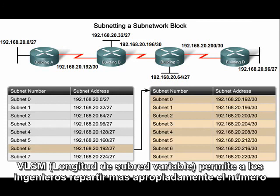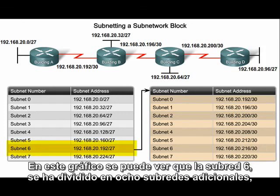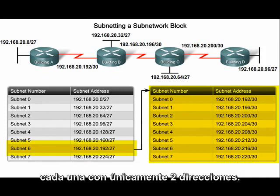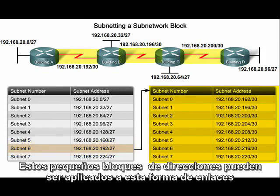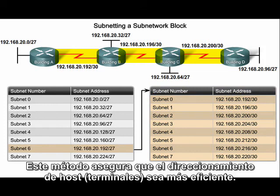VLSM enables network engineers to borrow a more appropriate number of bits to more closely match the number of host addresses needed. In this graphic, subnet 6 has been further subnetted into eight additional sub-subnets, each with only two host addresses. These small blocks of addresses can be applied to WAN links that only require two host addresses, making sure that host addresses are used more efficiently.